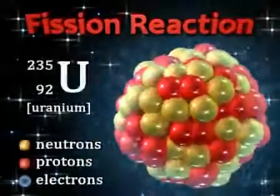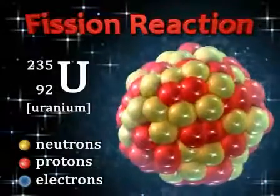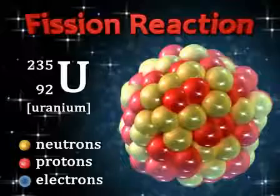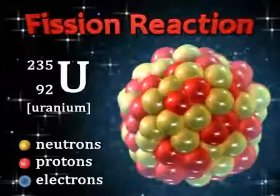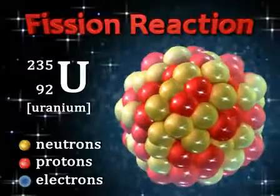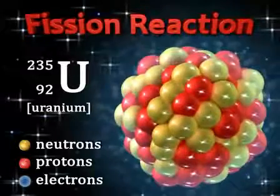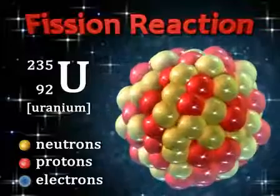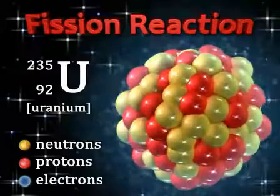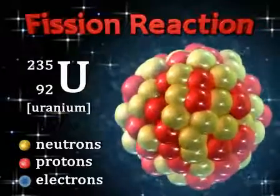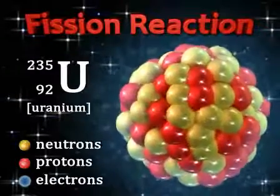Nuclear fission is the splitting of a heavy element's nucleus to form two new elements with smaller nuclei. One of the most important fission reactions is that of uranium-235, which is used in nuclear reactors and atomic weapons.